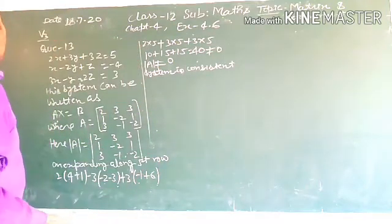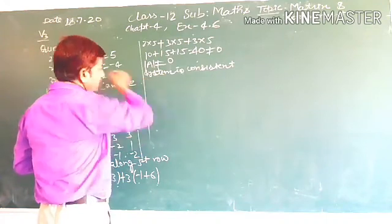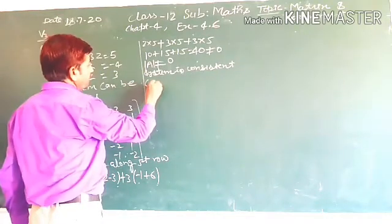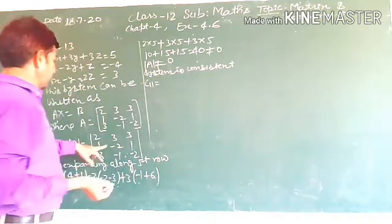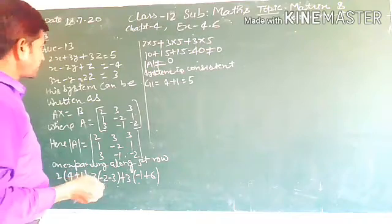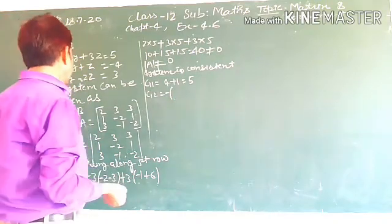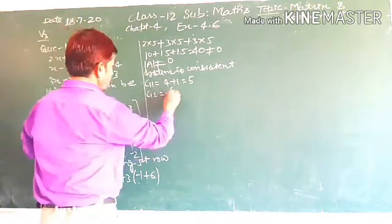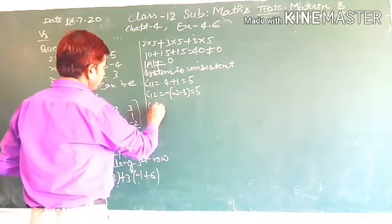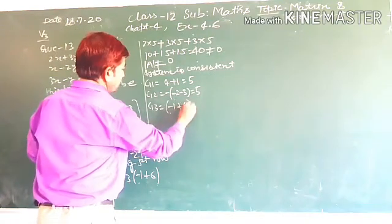Now we find the cofactors of the given determinant. C11 is positive: 4 plus 1 equals 5. C12 is negative: leaving elements of first row and second column, minus 2 minus 3, it is also equal to 5. C13: leaving elements of first row and third column, minus 1 plus 6, it is also equal to 5.